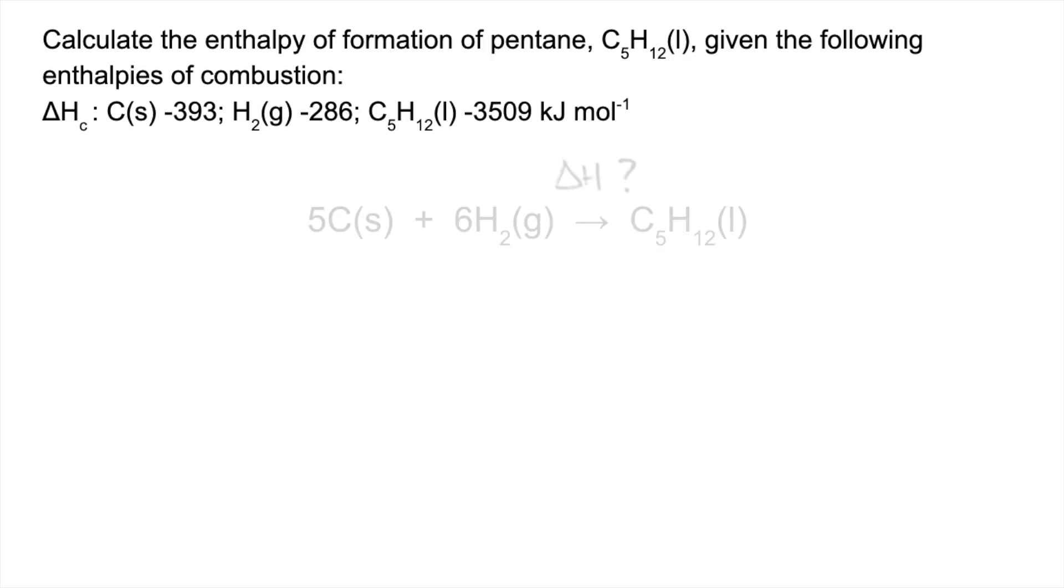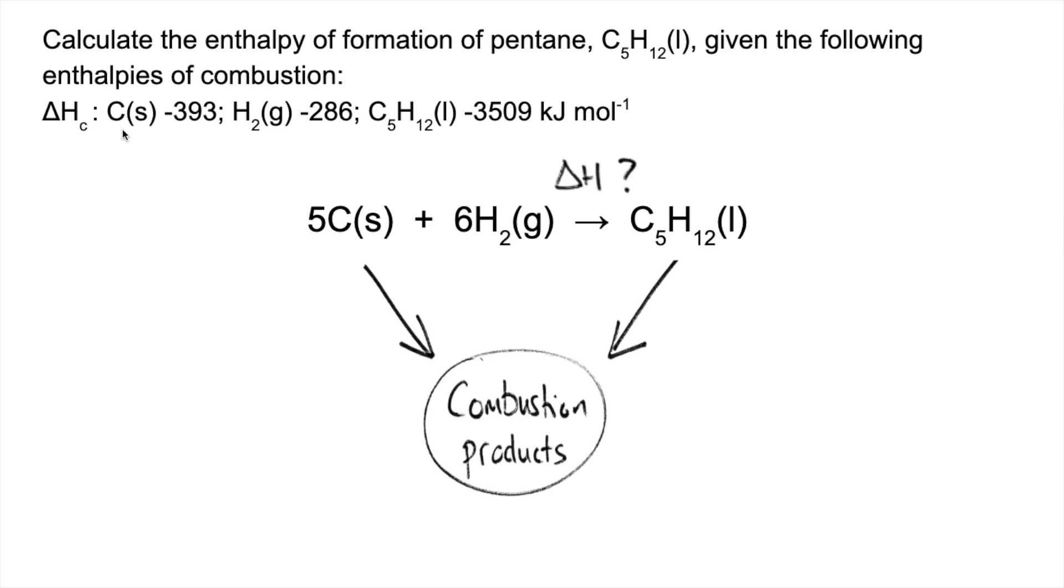The first thing I'm doing is writing the equation that represents the enthalpy change of formation of pentane. In other words, this is our A to B equation. Because these are all delta H_C values, enthalpies of combustion, we're combusting everything in the reaction, so we've got the combustion product there.